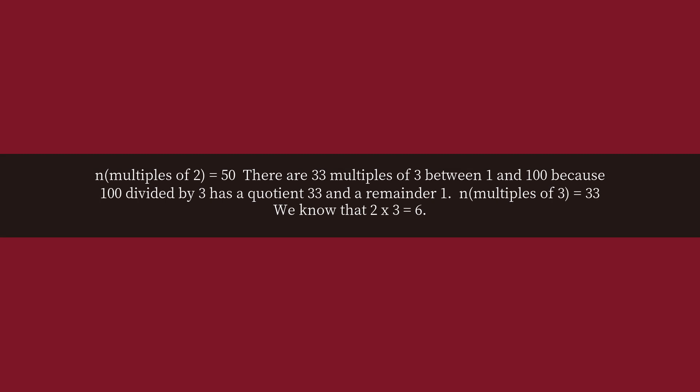There are 33 multiples of 3 between 1 and 100 because 100 divided by 3 has a quotient of 33 and a remainder of 1. n(multiples of 3) = 33. We know that 2×3 = 6.